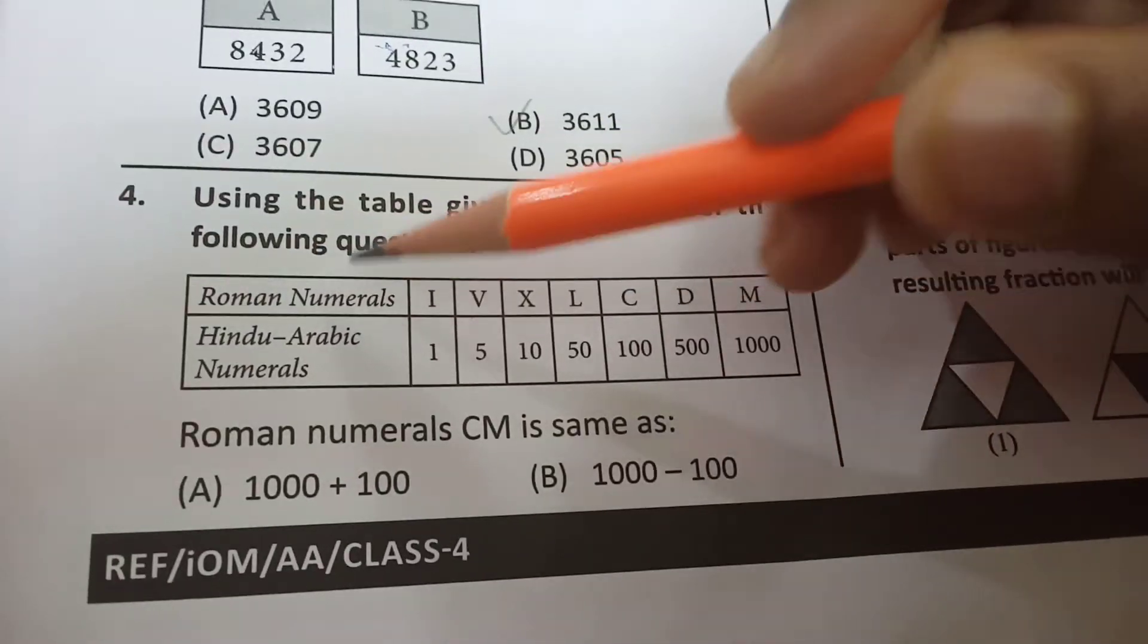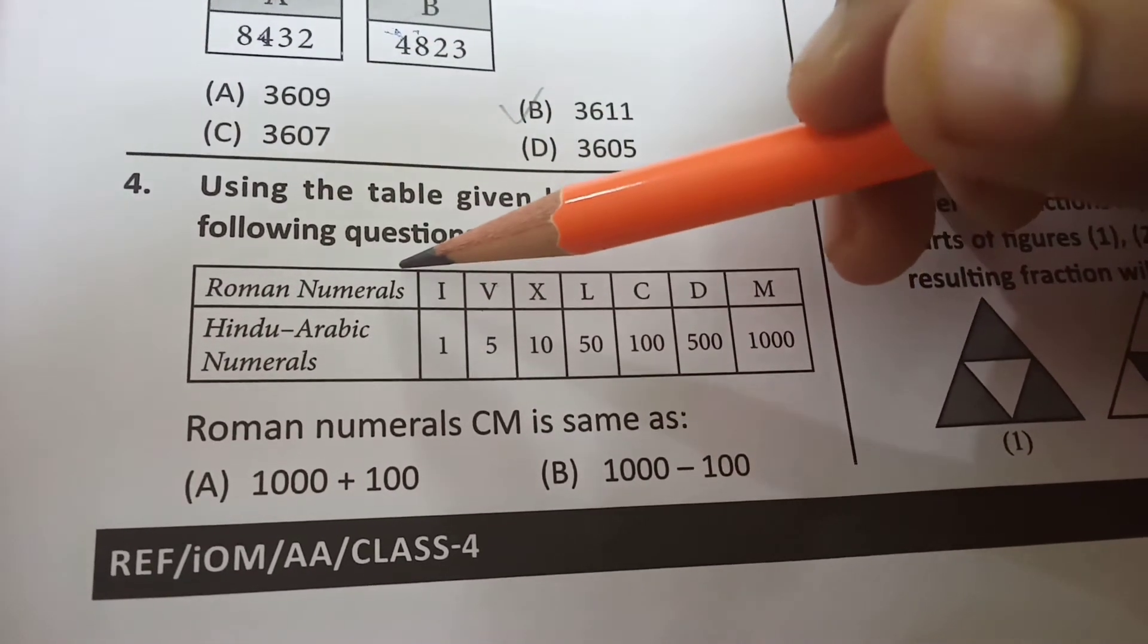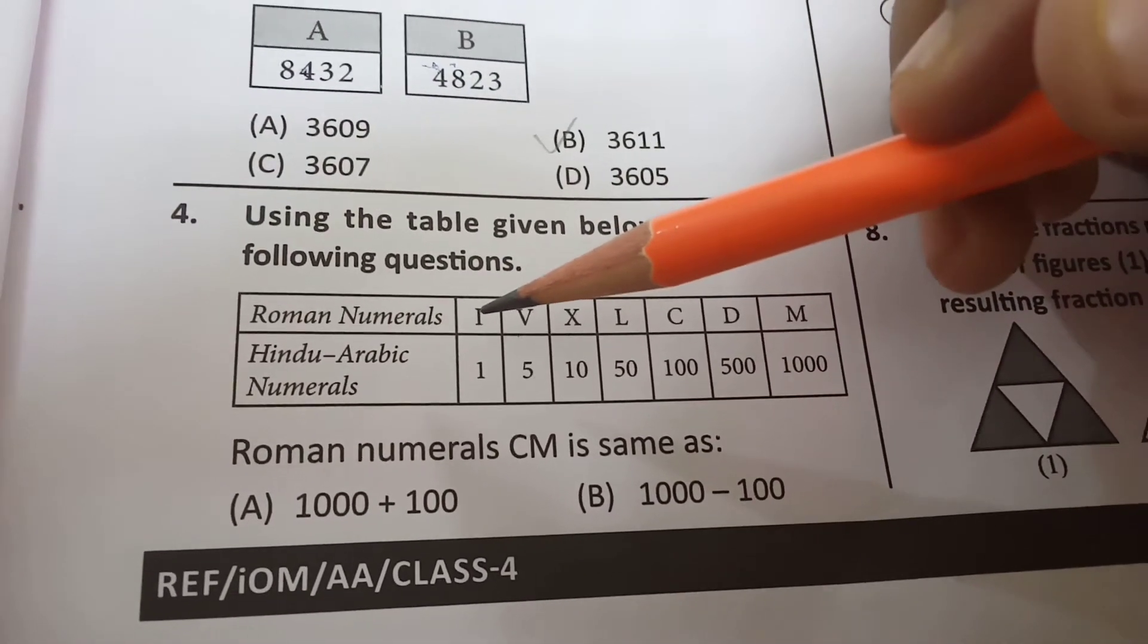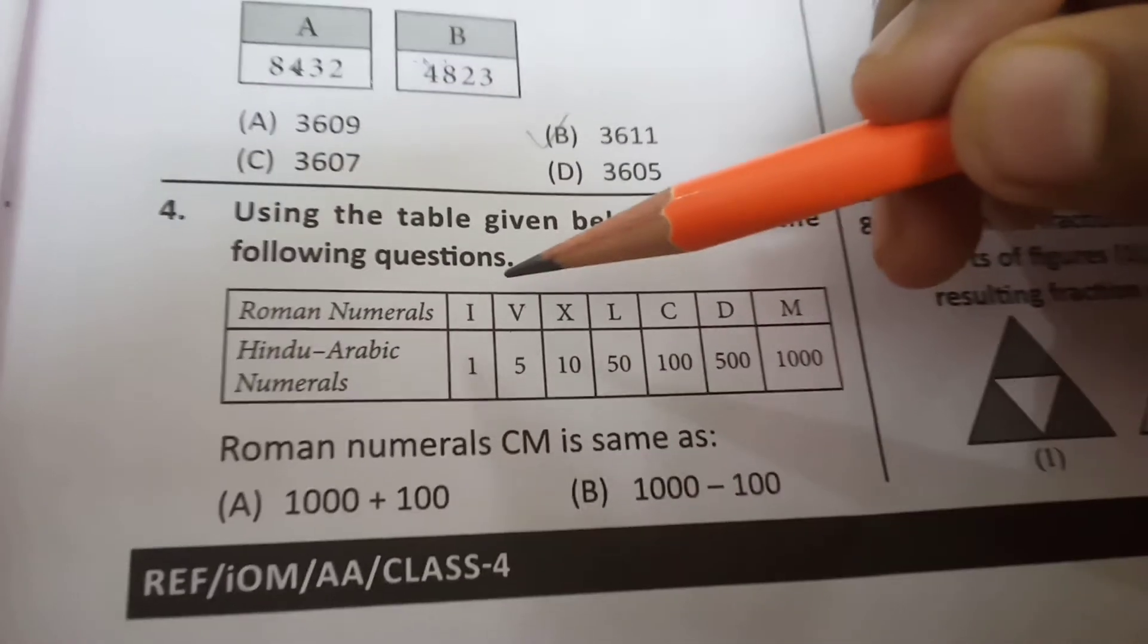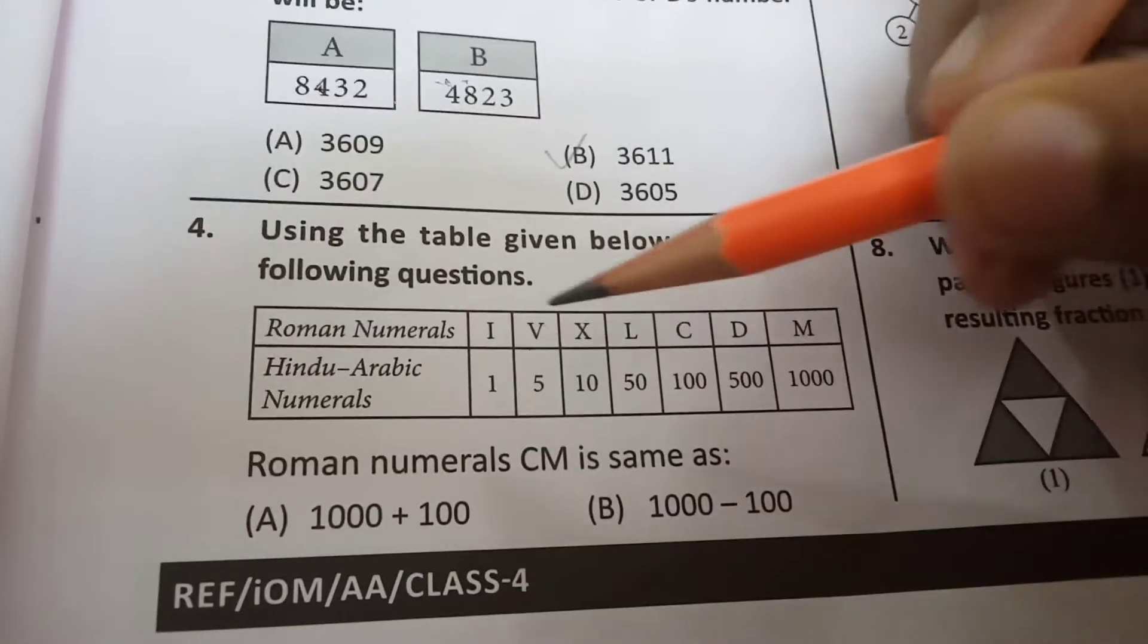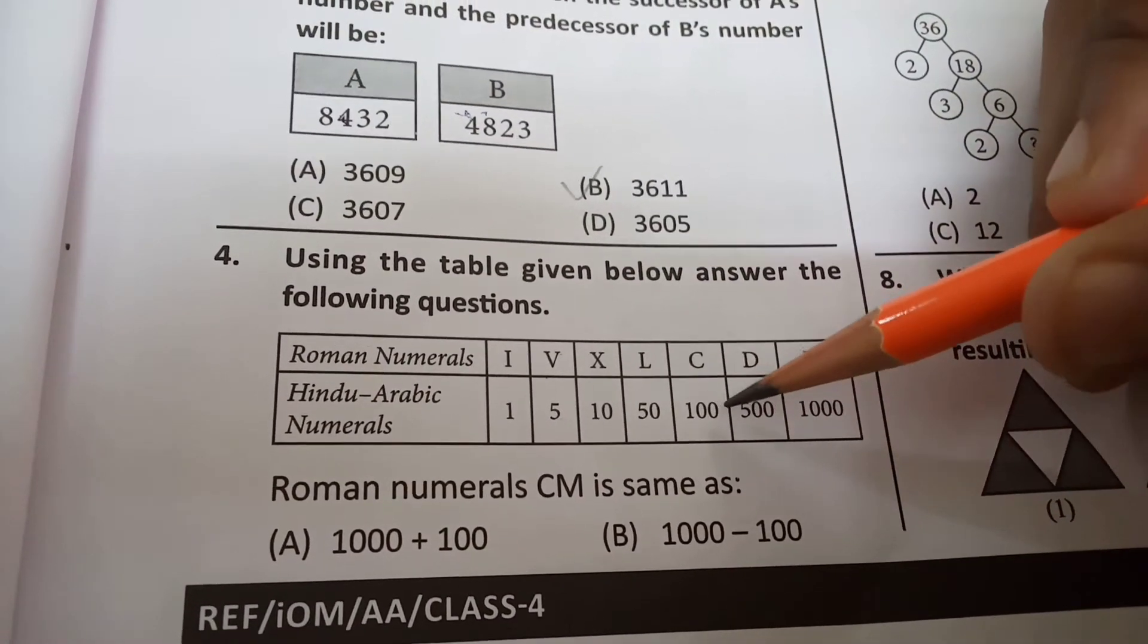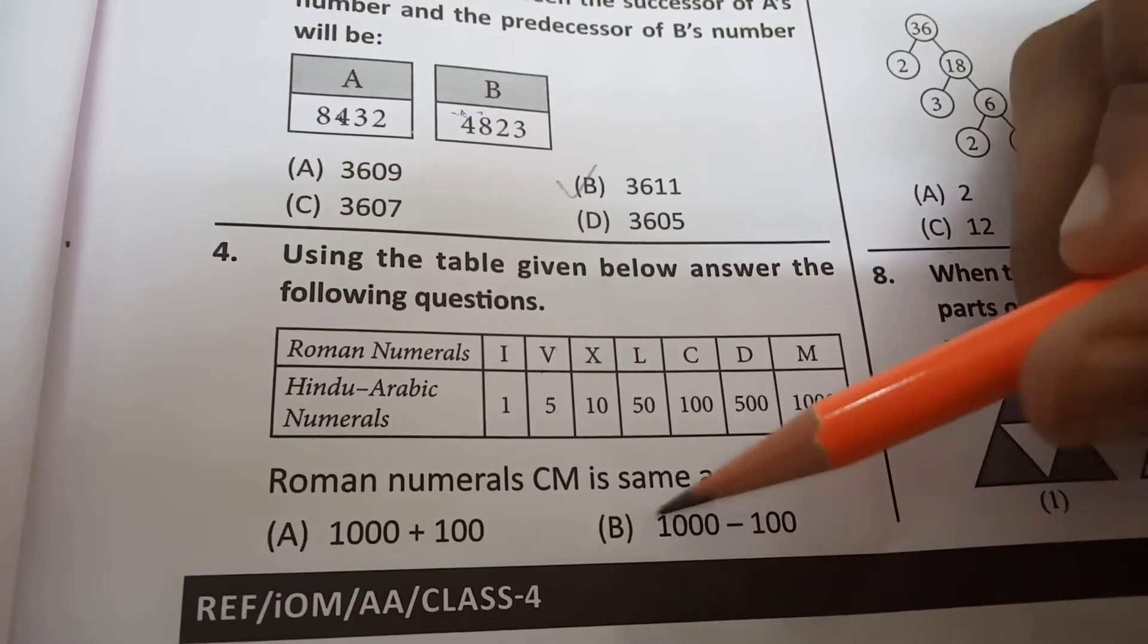So I means 1. 1 in Roman means I. So 2 in Roman means double I. 3 in Roman means triple I. So what does 4 in Roman mean? 4 doesn't mean 4 I's, it means IV. How does this equal to 4? Well I is subtracted from V, then we get 4. So here, C will be subtracted from M. Means 100 will be subtracted from 1000. Here it is showing 100 is subtracted from 1000. So B.